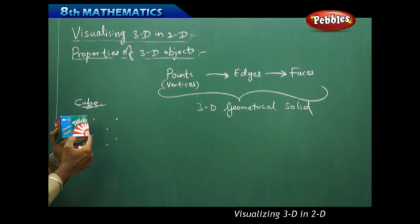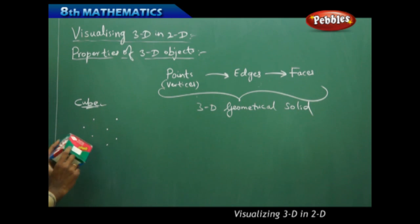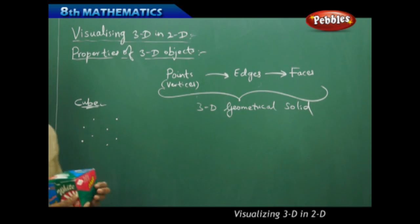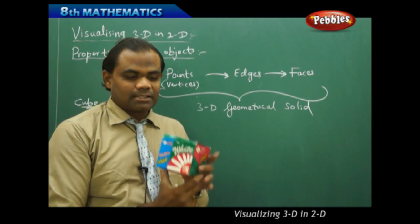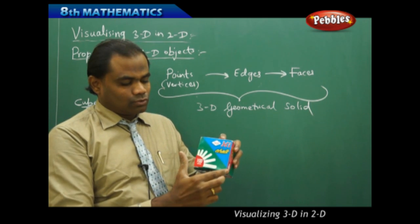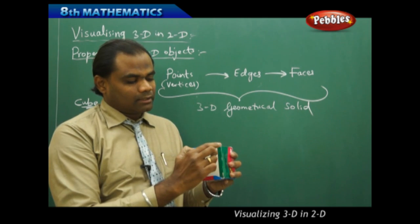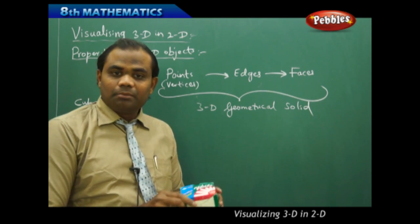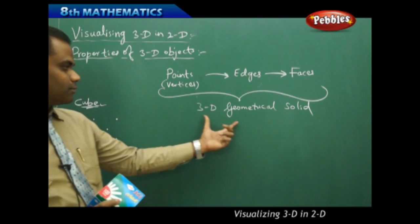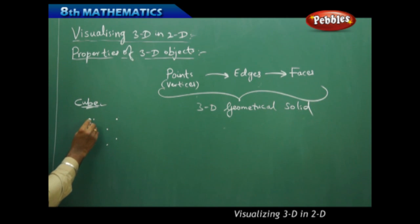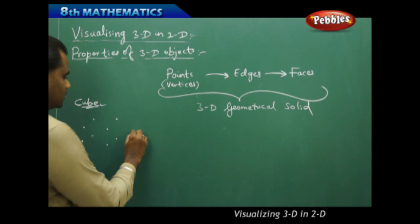These are the points or endpoints which are taken in case of a cube. I have four end points on the top and four end points on the bottom. So totally a cube has eight end points — counting one, two, three, four on the top and five, six, seven, eight at the back. These are the end points called vertices for a three dimensional geometrical solid. So for a cube, I have totally eight vertices.